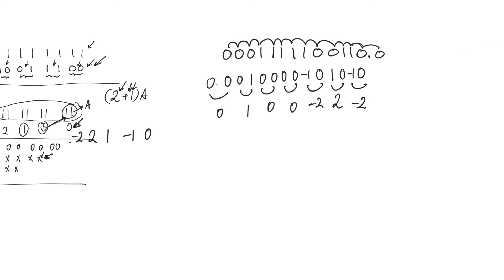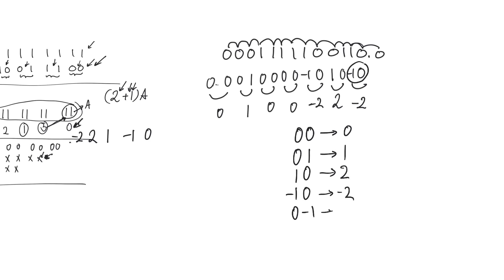We have two bits and we're considering only some possibilities: pairs zero-zero, zero-one, one-zero, and zero-minus-one, interpreted as zero, one, two, minus two, and minus one. But what about one-one and minus-one-minus-one, and minus-one-one, and one-minus-one? Minus-one-one is equivalent to minus two plus one, which is minus one. One-minus-one is equivalent to two minus one, which is plus one. So they are exactly equivalent to cases we already have and give us no trouble.